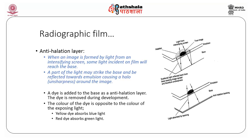There is also an anti-halation layer. When an image is formed by light from an intensifying screen, some light incident on the film will reach the base. A part of this light may strike the base and be reflected back towards the emulsion, causing a halo effect as seen in this figure — a black dot surrounded by many minute dots. To get rid of this halation effect, a dye is added to the base as an anti-halation layer; the dye is removed during processing. The color of the dye is opposite to the color of the exposed light — for example, yellow dye absorbs blue light, and red dye absorbs green light.